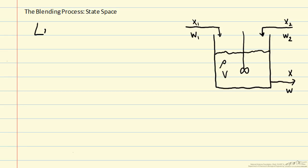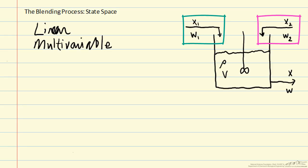So we're going to focus on systems that are linear and multivariable. We will continue to use the blending process as an example. So we have two streams that are coming into a single stirred tank. We're blending them together and we have a single outlet stream.